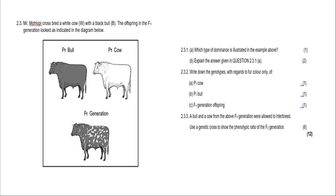Let's jump into question 2.3 — we're going to spend about five to ten minutes here. This question has to do with the topic relating to Germany ticks. The question reads: Slopey must crossbreed a white cow, given the capital letter W for white, with a black bull, given capital letter B. The offspring in the F1 generation will be as indicated in the diagram below.